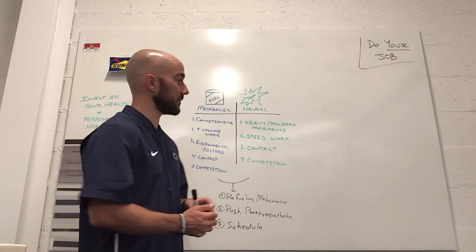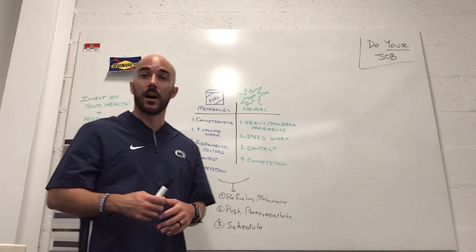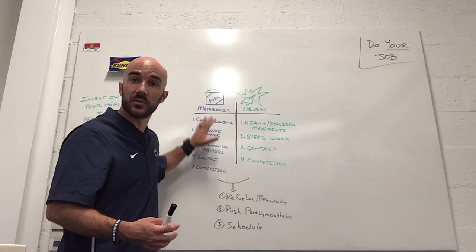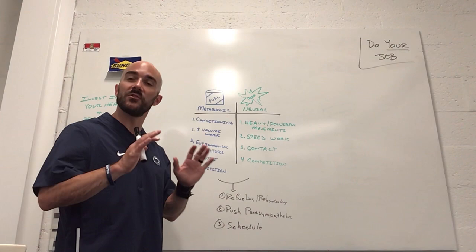So breaking down different types of stress: we have metabolic stress and we have neural stress. Different activities elicit different types of stress, but when we boil things down to the principle level, we focus on refueling and rehydrating, pushing the brake pedal by slowing down and disconnecting in ways that work for you, and maintaining a consistent schedule — all of which will really help in the long term. Hope everybody's doing great. Can't wait to see everybody soon. Take care.